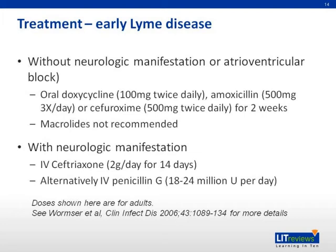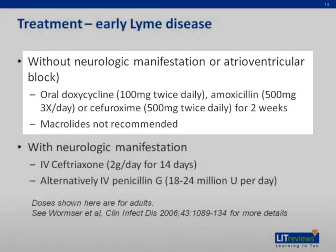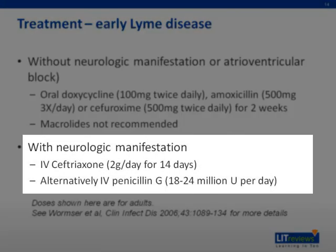For treatment of early Lyme disease, patients can be divided into two groups. For patients without neurological manifestation or atrioventricular block, oral antibiotics can be used — for example, doxycycline 100 milligrams twice daily, amoxicillin 500 milligrams three times daily, or cefuroxime 500 milligrams twice daily for two weeks. Macrolides are not recommended. For patients with neurological manifestations, IV antibiotics are needed. The recommended one is IV ceftriaxone two grams per day for 14 days; alternatively, penicillin could be used.